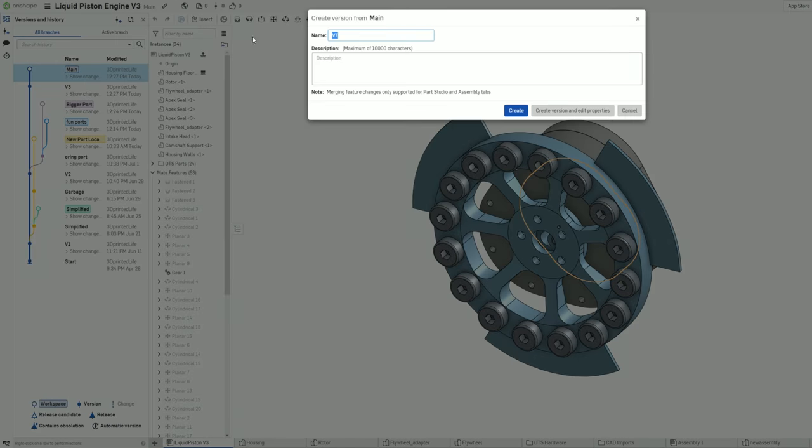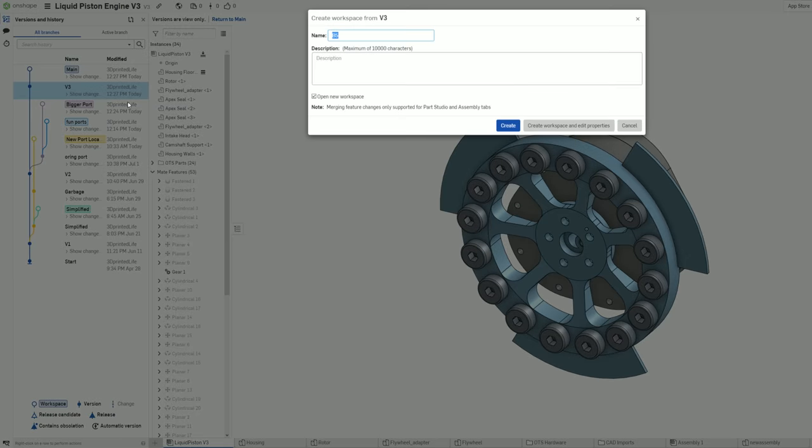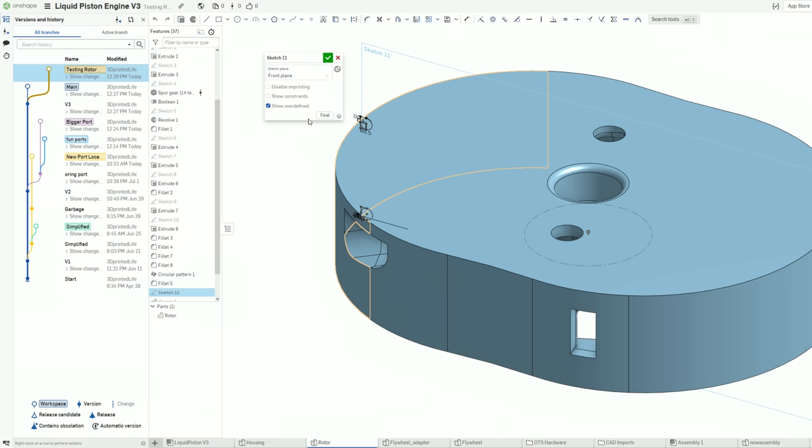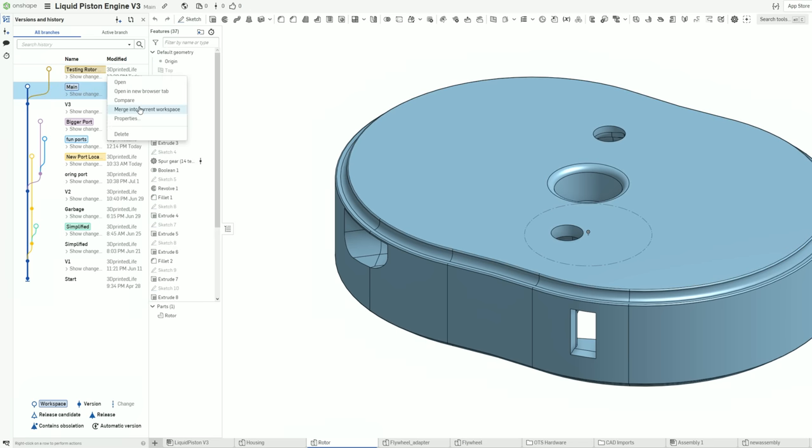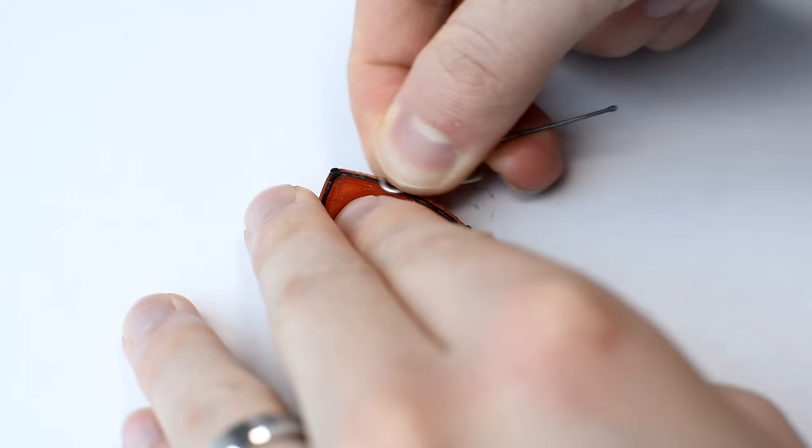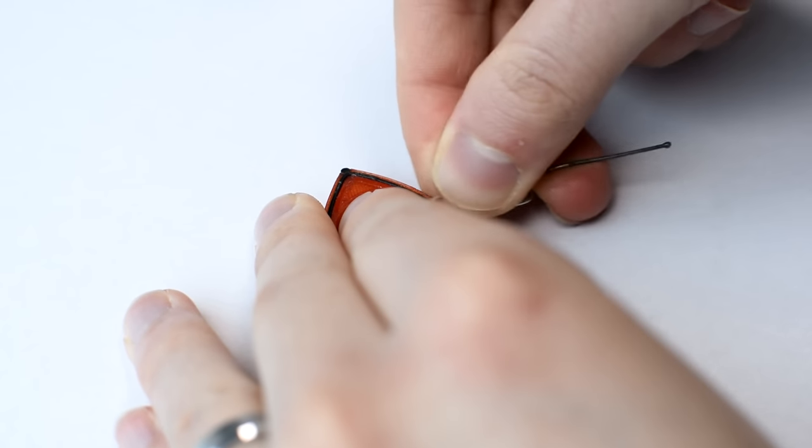Using Onshape, I was able to take advantage of their version control system to save the current design, make a new branch, and try out some new things. If they turned out to be successful, I can merge them back into the master. Or if not, I can just nuke them out of existence. This version control let me test two new ideas without risking my current progress.